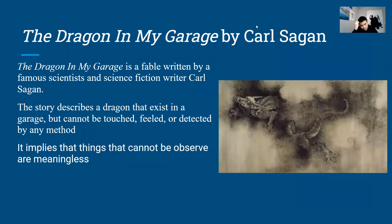To understand this, we can look at the story called 'the dragon in my garage.' It describes a dragon that exists in the garage but cannot be touched, felt, or detected by any method. It basically implies that things that cannot be observed through any means are meaningless. You might say there is a dragon in your garage, but if you cannot know anything about it, then its existence does not have true meaning.